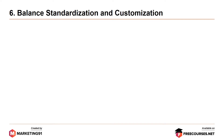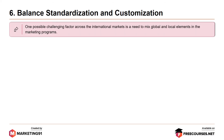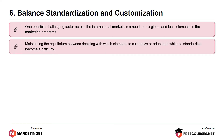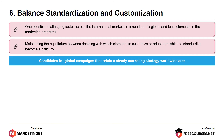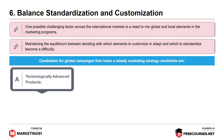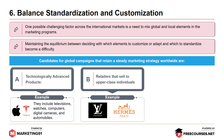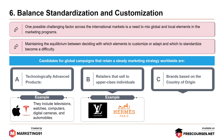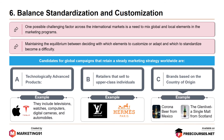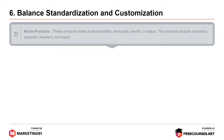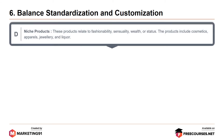Moving on to the sixth commandment: balance standardization and customization. One challenging factor across international markets is the need to mix global and local elements in marketing programs. Maintaining the balance between which elements to customize and which to standardize is difficult. Candidates for a global campaign that retain a steady worldwide marketing strategy include: technologically advanced products such as televisions, watches, computers, digital cameras, and automobiles; retailers that sell to upper-class individuals such as Louis Vuitton and Hermes; brands based on country of origin such as Corona Beer from Mexico; and niche products related to fashionability, sensuality, wealth, or status — including cosmetics, apparel, jewelry, and liquor.